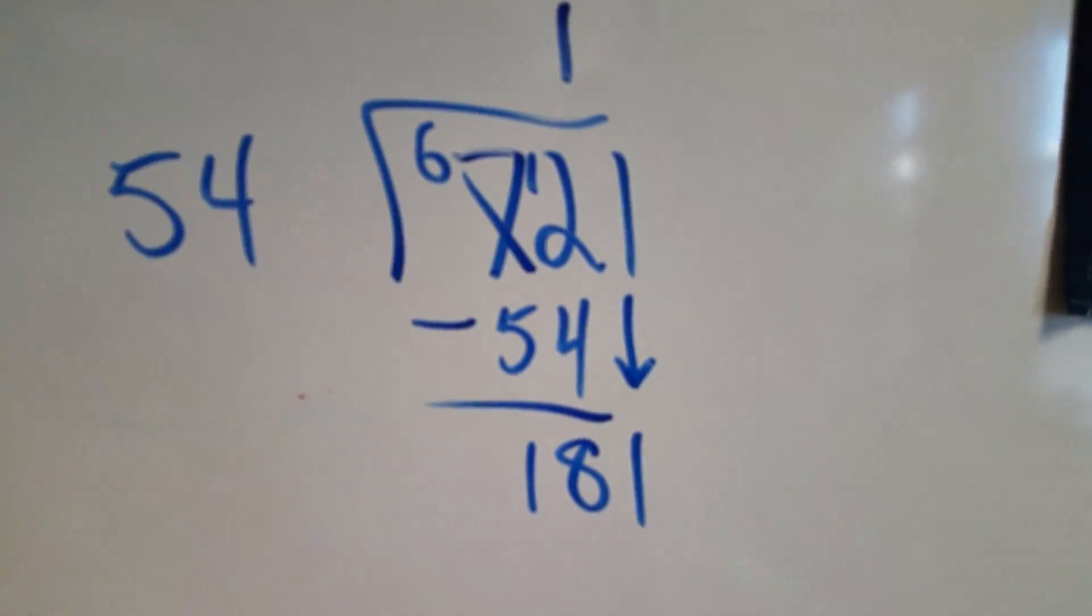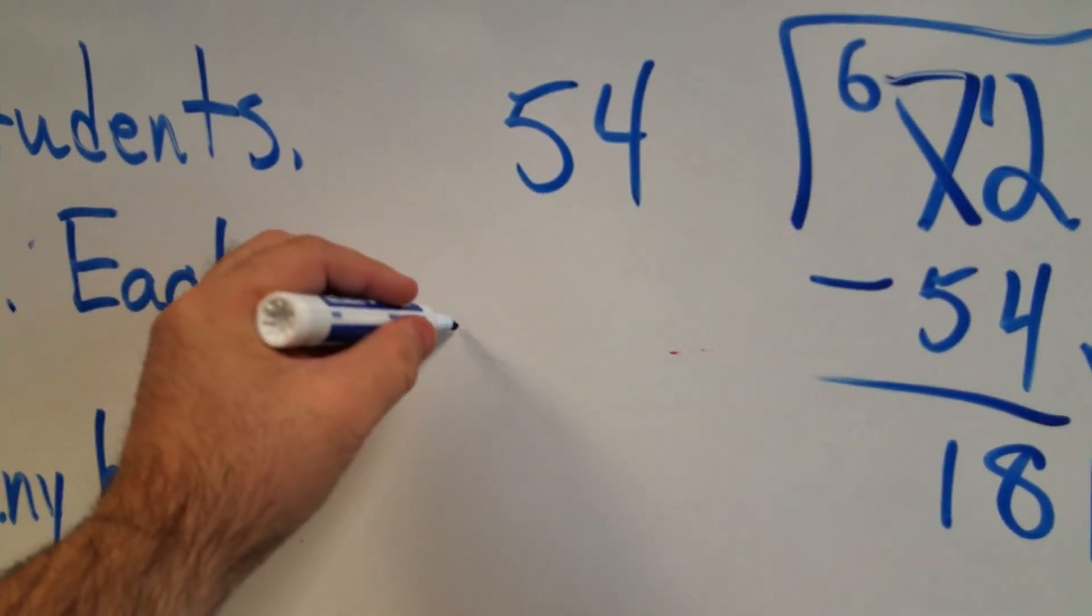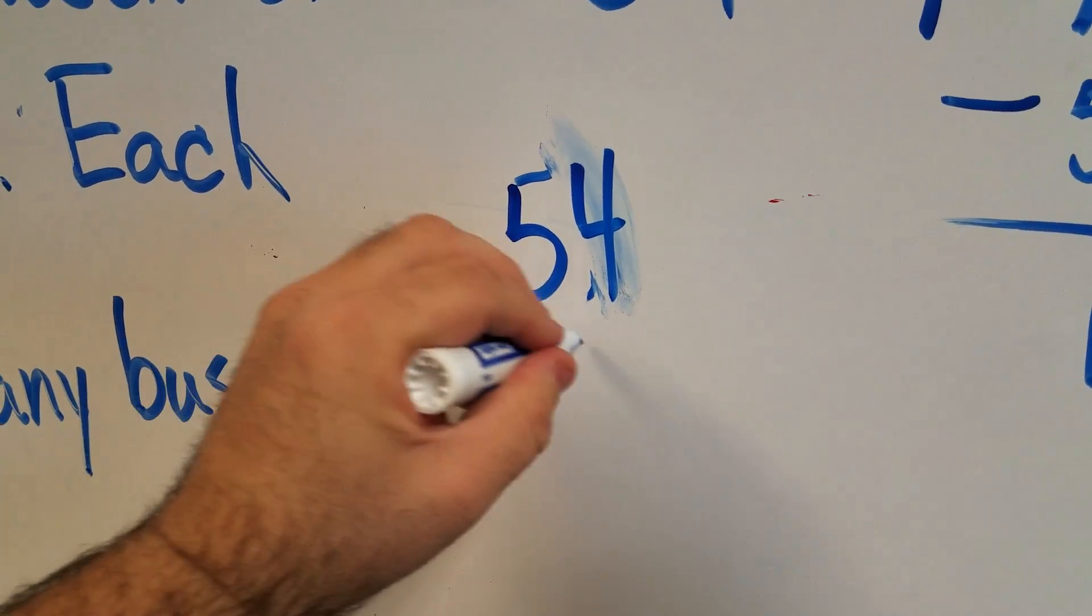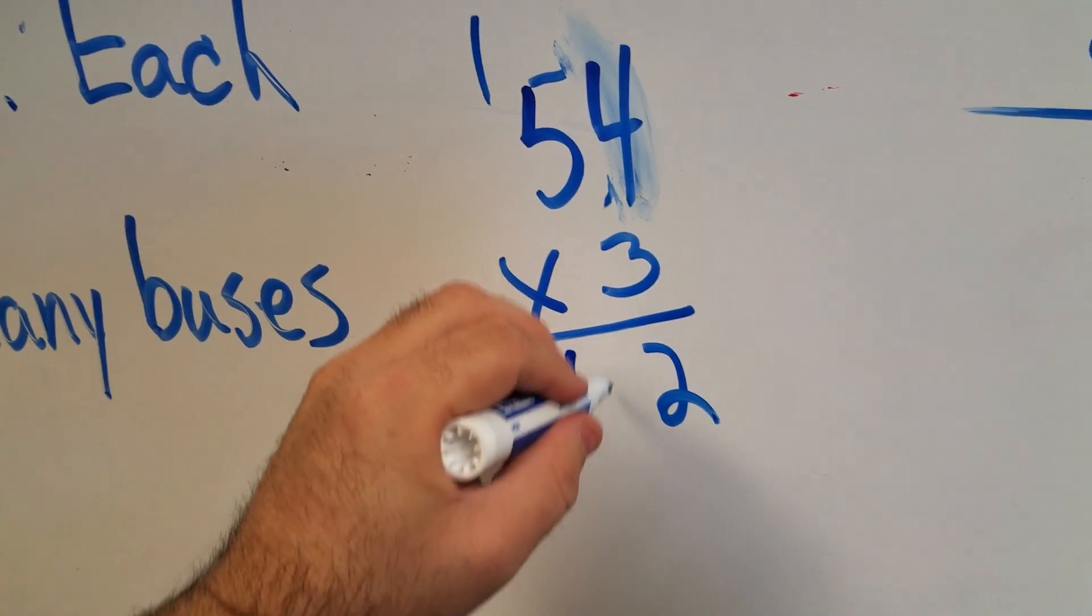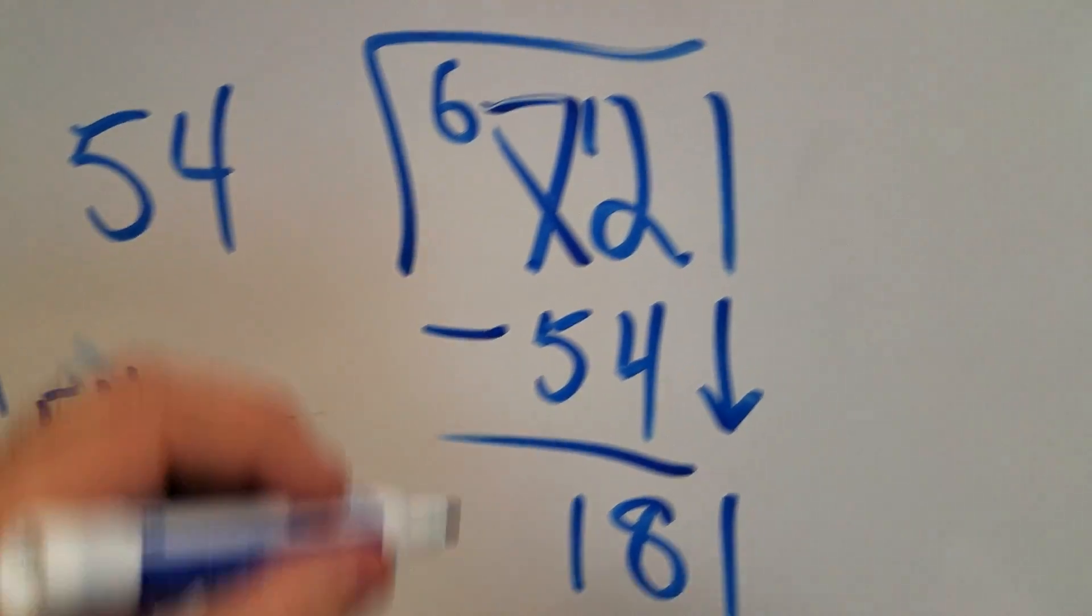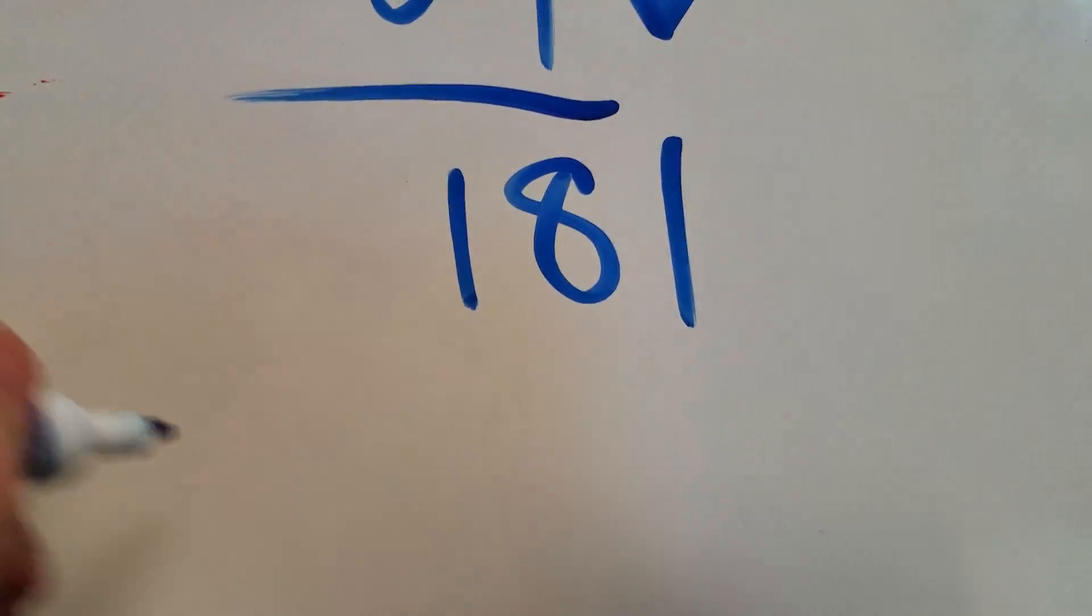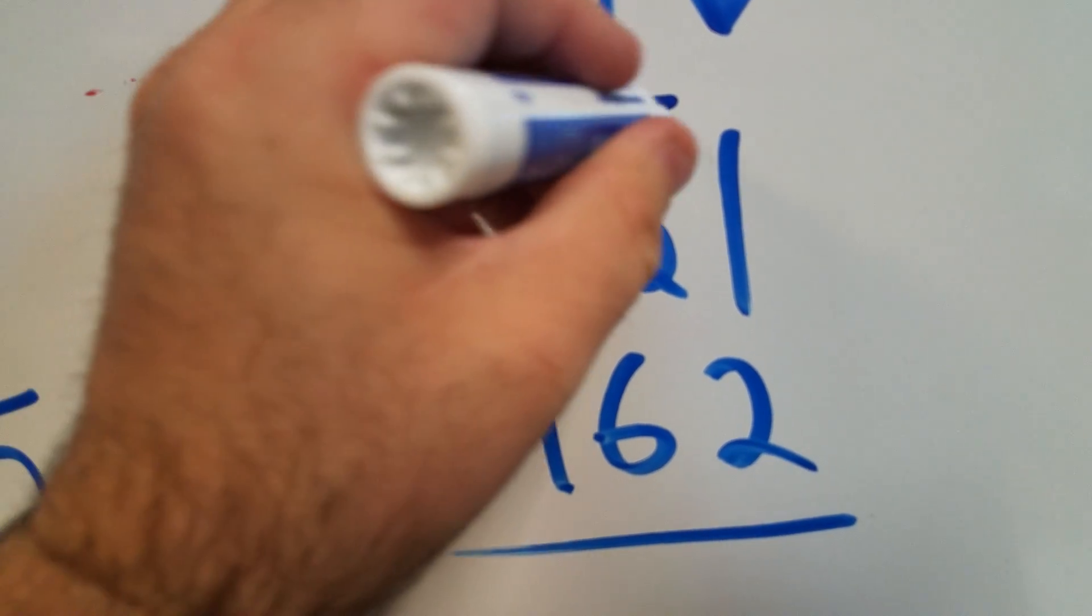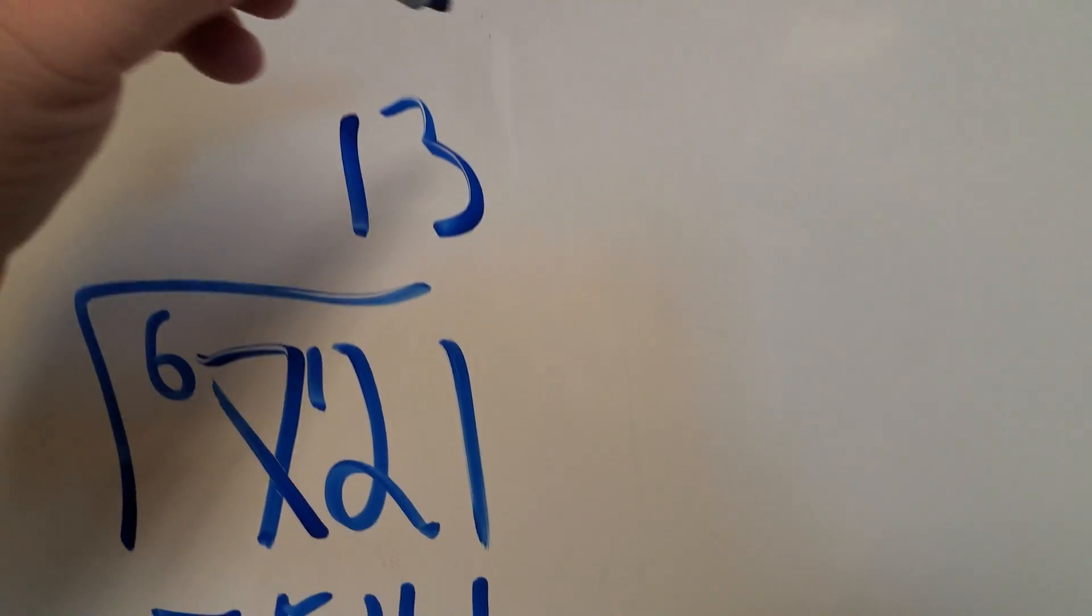I'm going to do a little guessing and checking. 50 times 3 is 150. So let's see what 54 times 3 is. 4 times 3 is 12. 5 times 3 is 15. Plus 1 is 16. Hey, that'll work. So, I'm going to put 3 up here. And then subtract 54 times 3 is 162. 7 minus 6 is 1. So I have 13 remainder 19.